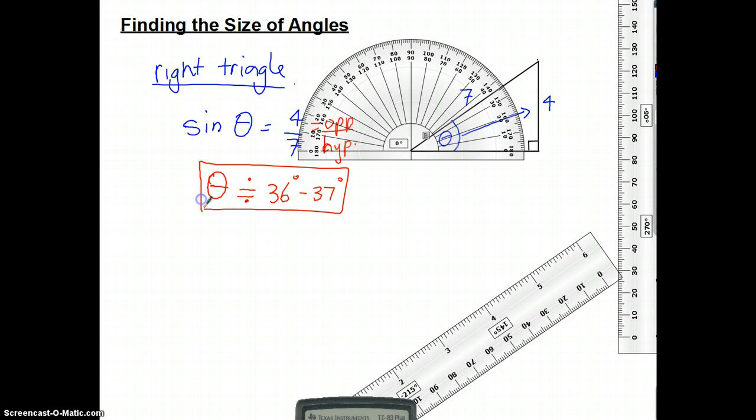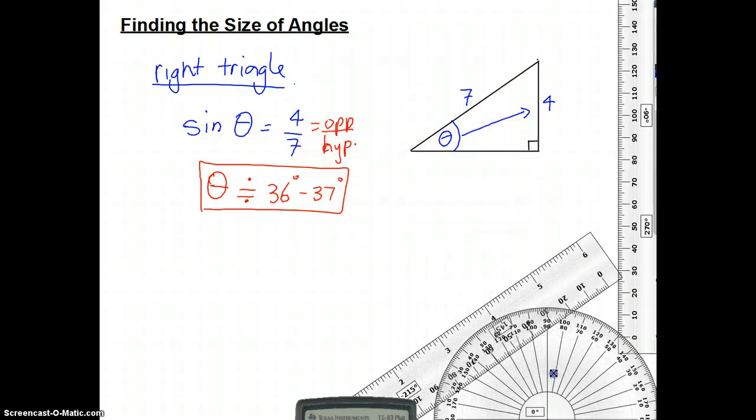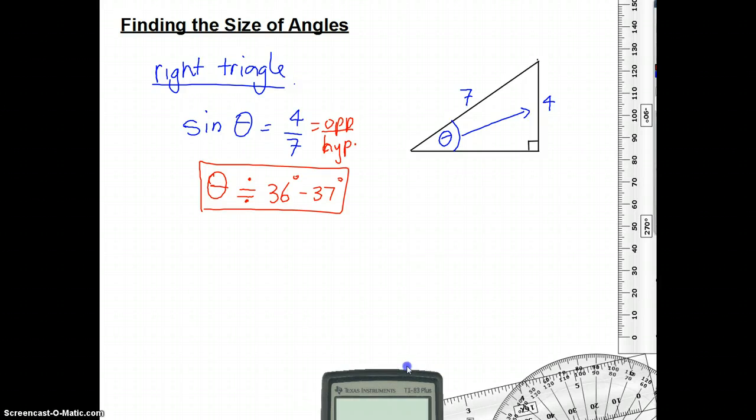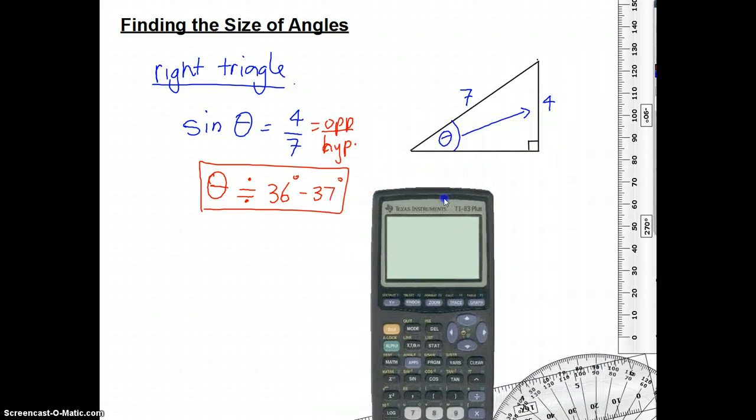Now, there's always a bit of human error there, but it looks like, according to these, 36 to 37 degrees. Okay, now that could be a little bit tedious if we do that every single time. So I'm going to show you a way technology can actually help us today. Okay, I'll put my rulers down a little bit. Okay, so here's my calculator.